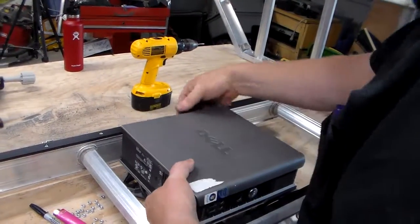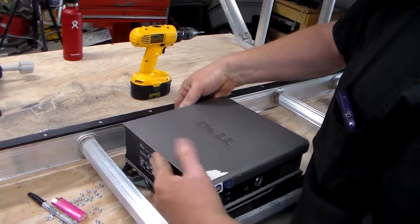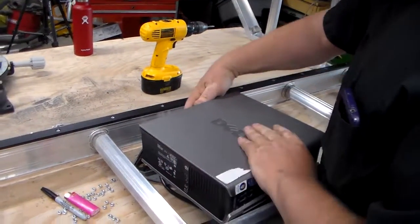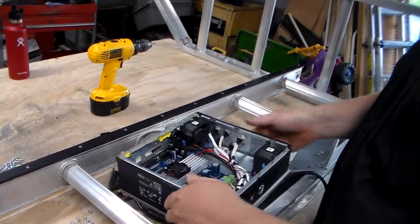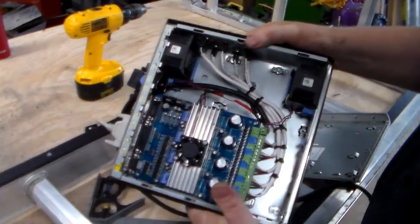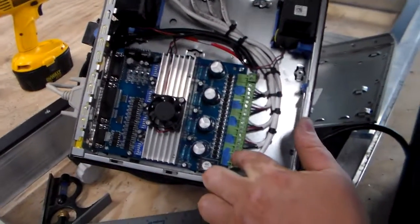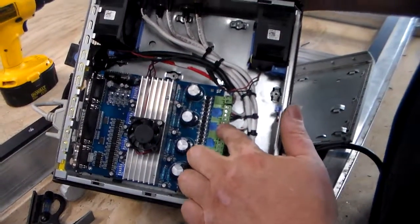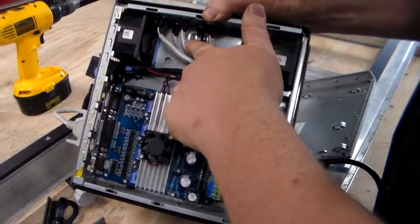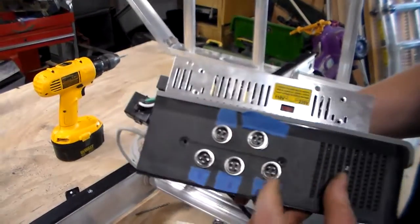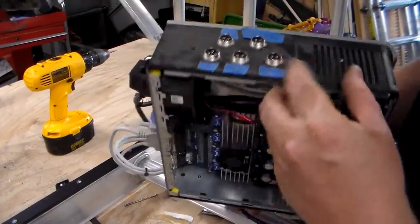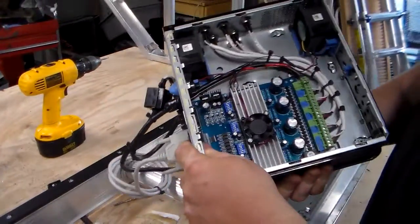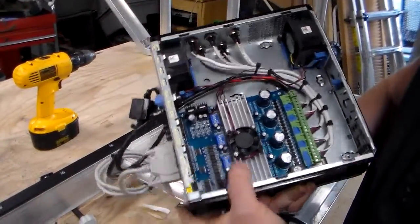I basically gutted out the components of it and put this driver board in. I've wired each of the outputs up to these jacks up here. These are aviation jacks, I think is what they call those. So I'll be able to hook the stepper motors right into there.